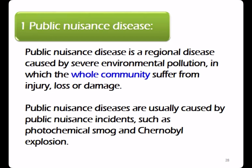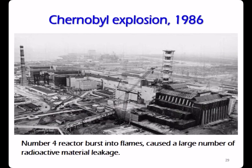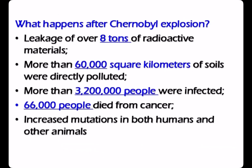Public nuisance diseases are usually caused by incidents such as photochemical smog and the Chernobyl explosion. The Chernobyl explosion in 1986 caused a large amount of radioactive material to leak into the air and onto the ground — over 8 tons of radioactive materials were released, more than 60,000 square kilometers of soil were directly polluted, 3 million people were infected, and 66,000 people died from cancer. The radioactive exposure also increased mutation rates in both humans and other animals.